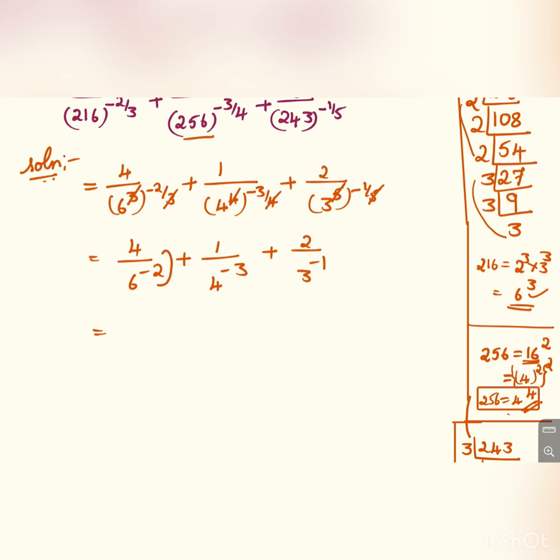We can take these things to the numerator: 6 to the power minus 2, 4 to the power minus 3, and 3 to the power minus 1. It will be 1 by a to the power minus n is equal to a to the power n.